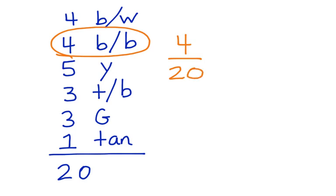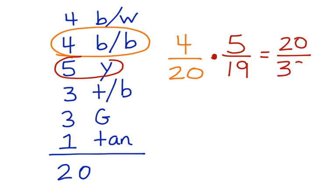Then, we want to take out a yellow fish. And we're going to multiply this because it's a compound probability. And we're going to do 5. And one fish is already taken out, the blue and black one. So it's out of 19. And when we multiply those together, we have 20 out of 380.